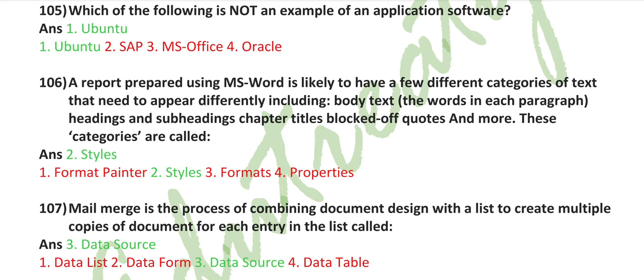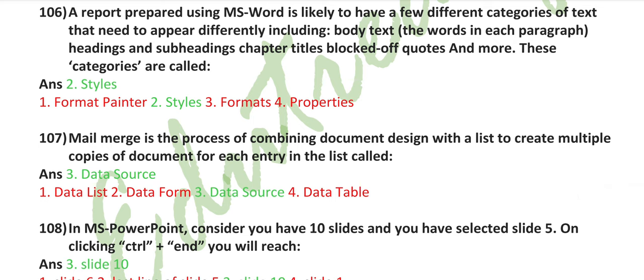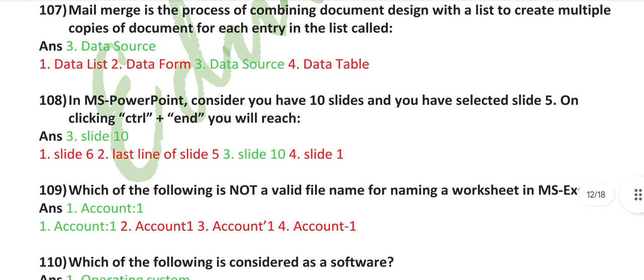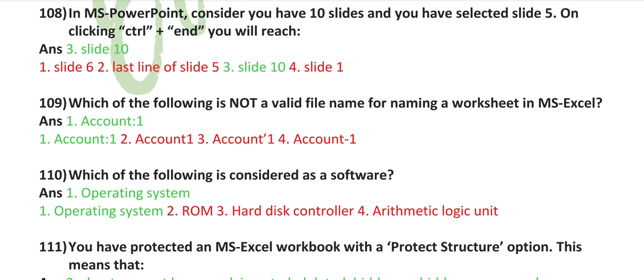Which of the following is not an example of application software? Ubuntu. A report prepared using MS Word is likely to have a few different categories of text that need to appear differently, including body text, the words in each paragraph, headings and subheadings, chapter titles, block quotes, and more. These categories are called styles. Mail merge is the process of combining document design with a list to create multiple copies of documents for each entry in the list called data source. In MS PowerPoint, consider you have 10 slides and you have selected slide 5. On clicking Control plus End, you will reach slide 10.